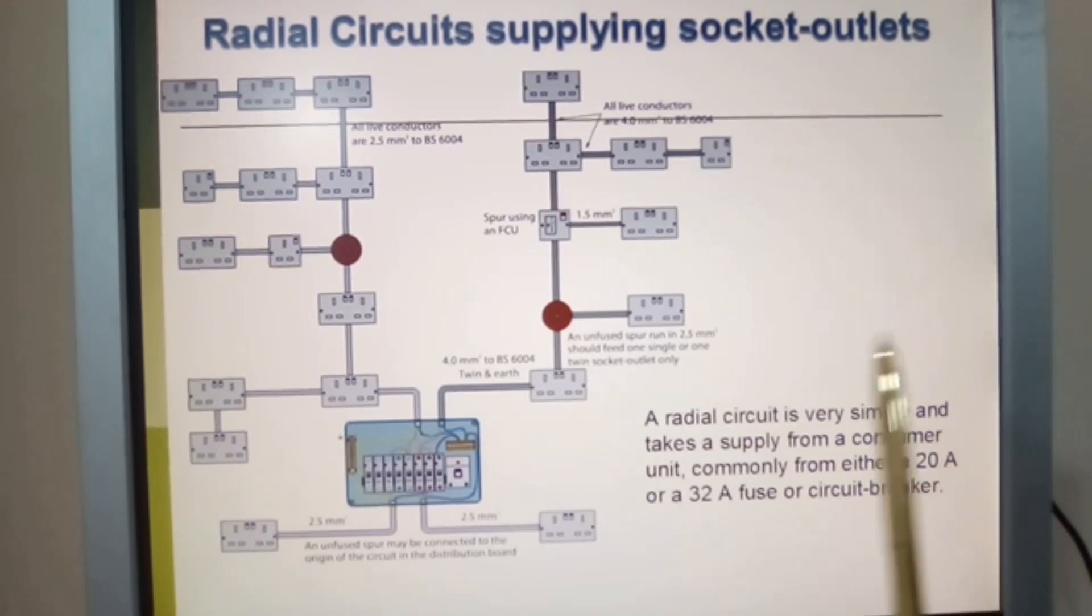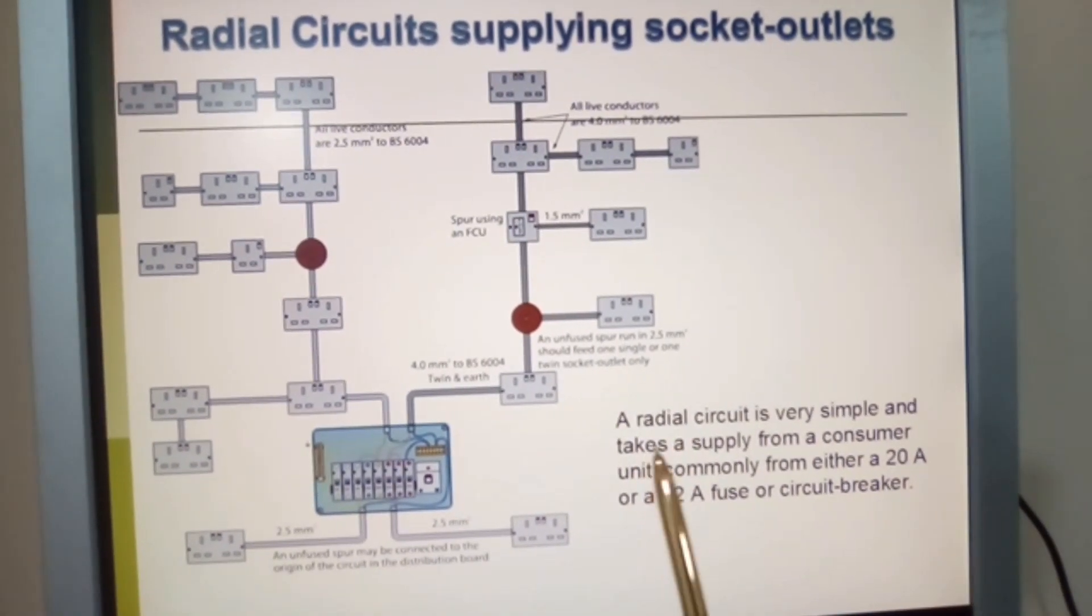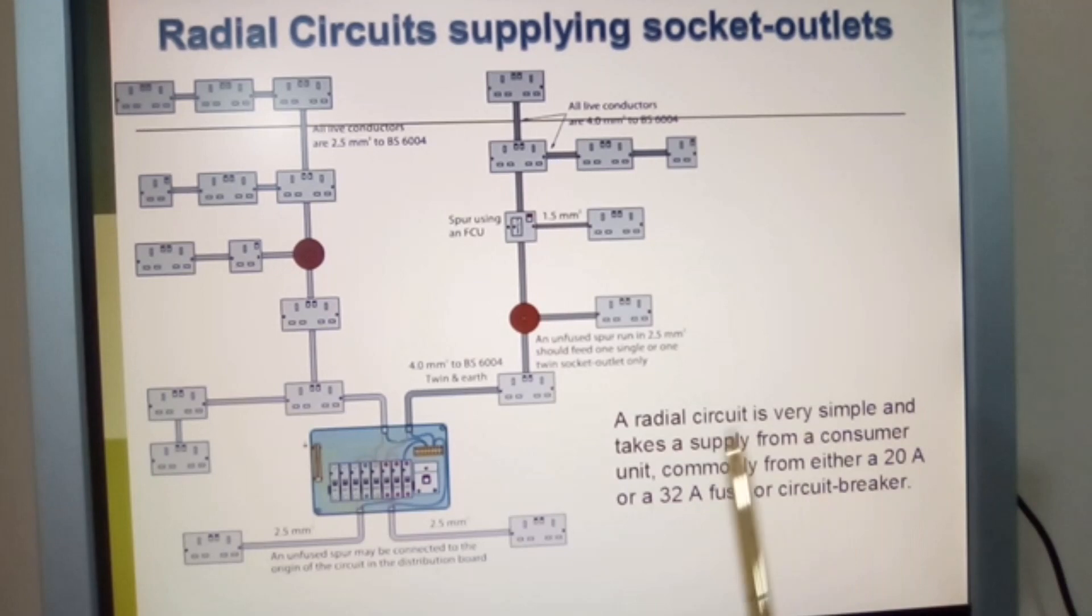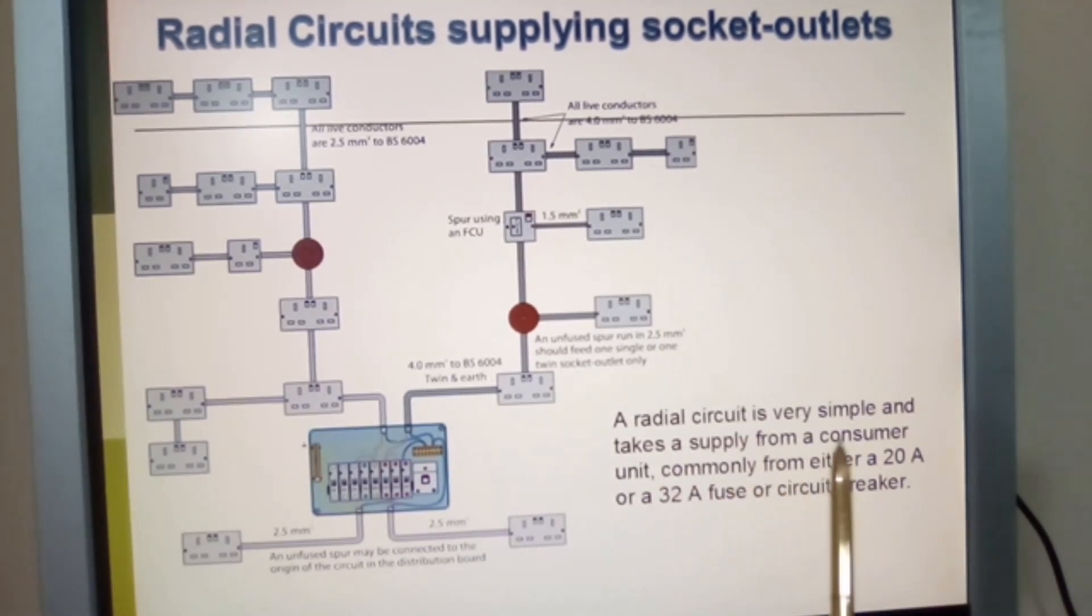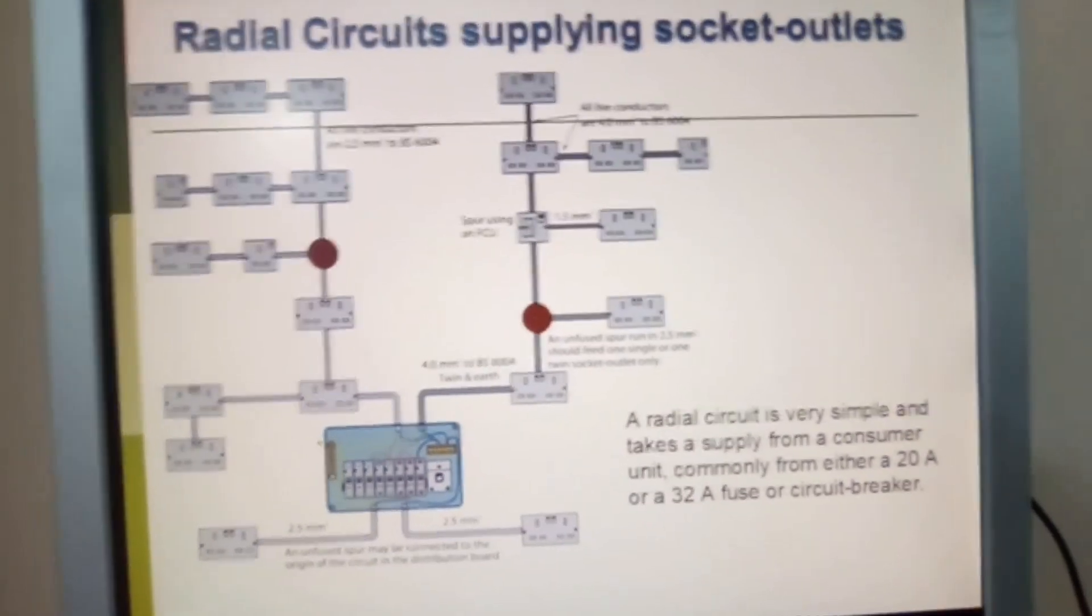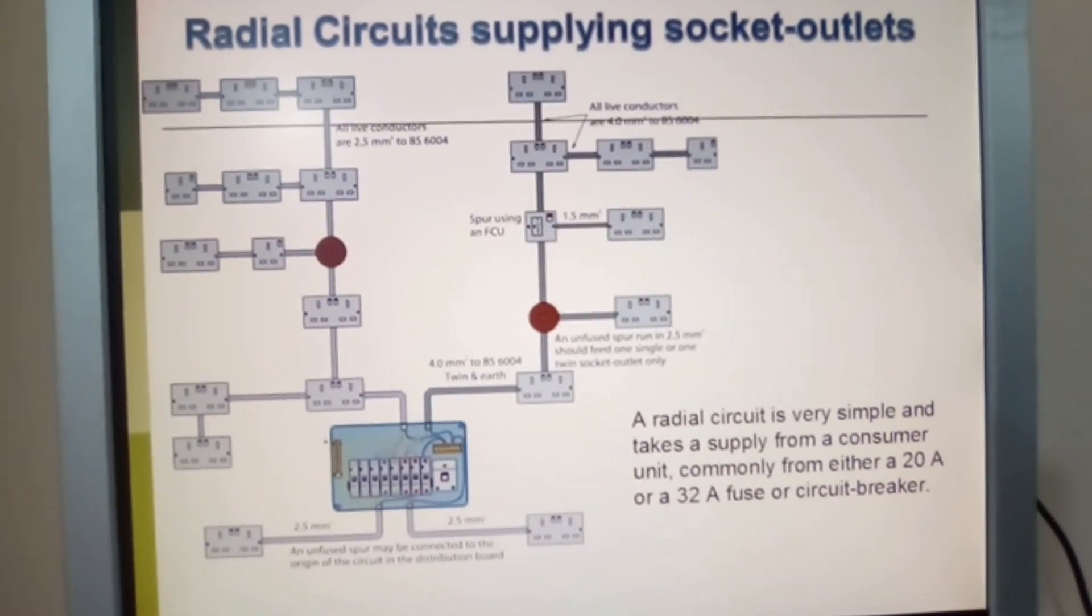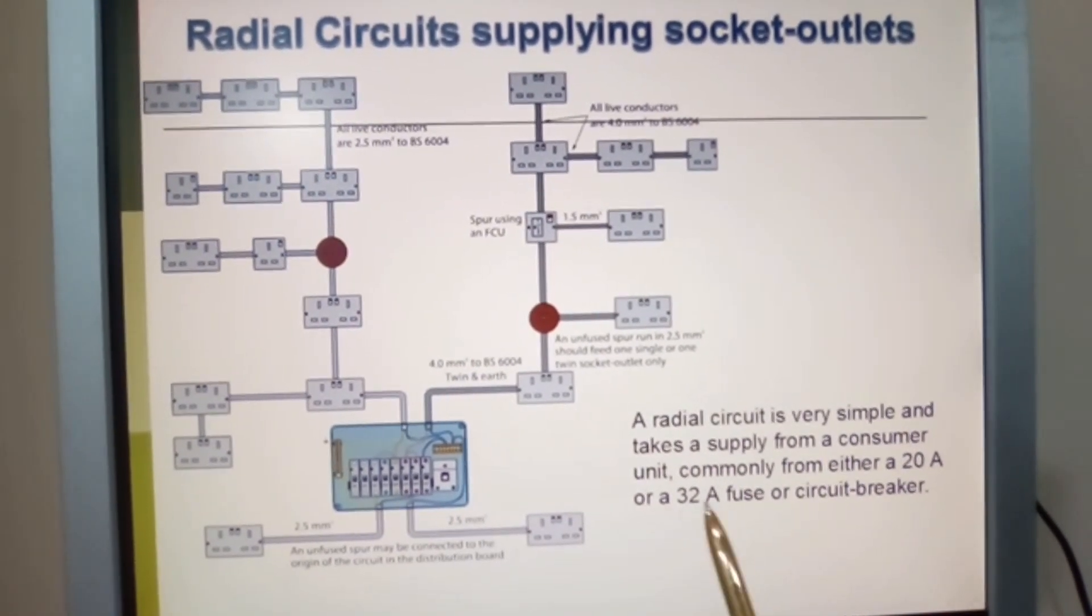The circuit is very simple and takes a supply from a consumer unit, commonly from either a 20 amp or 32 amp fuse or circuit breaker. It could be a 30 amp fuse but a 32 amp circuit breaker.